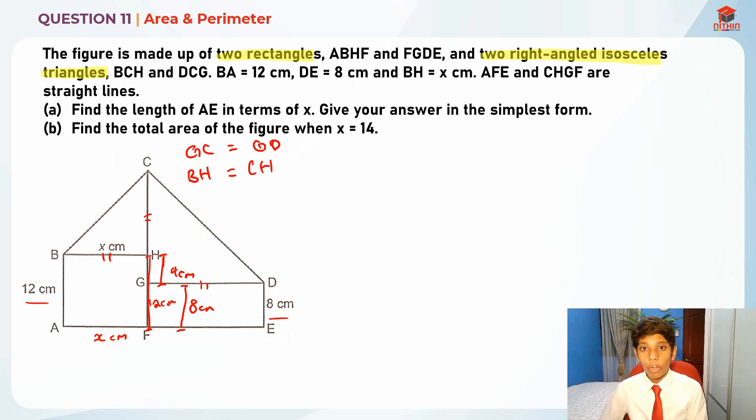DE is 8 cm, meaning that GF is also 8 cm. HG is actually 4 cm because 12 minus 8 gives us 4. Two right-angled isosceles triangles BCH and DCG. BA equals 12 cm, DE equals 8 cm, BH equals x cm.